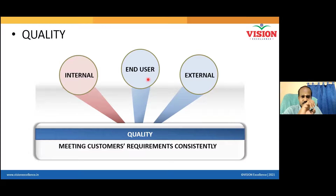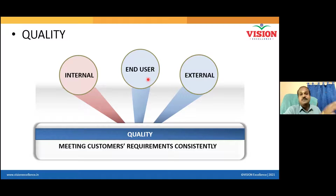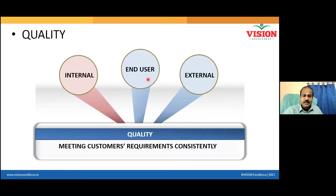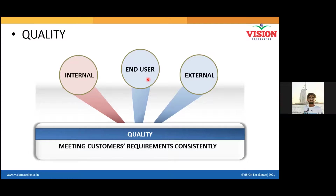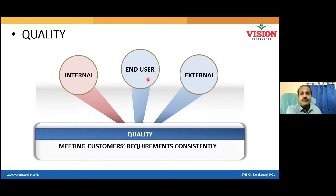The inspection department is the customer for the assembly department. Because after assembling the product, I give it to the inspection team. When I give something to someone, it is very important that I understand their requirement. For example, if software installation is not done, testing is not possible. Customer requirements need to be understood at every stage of manufacturing.